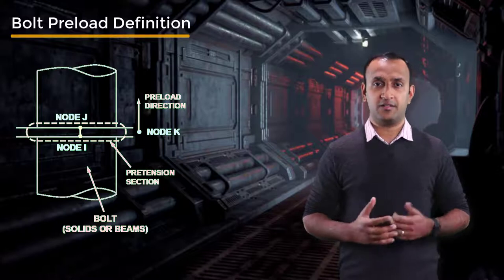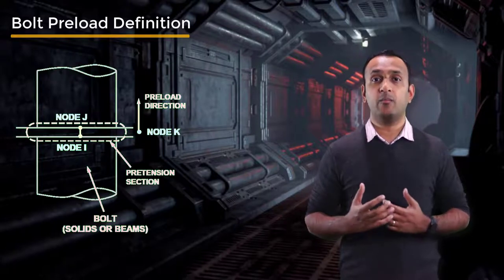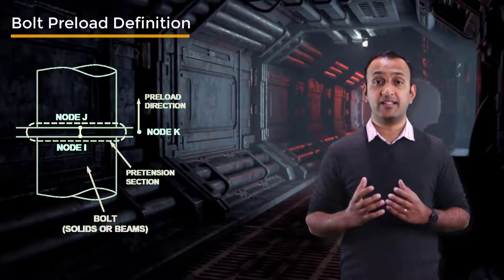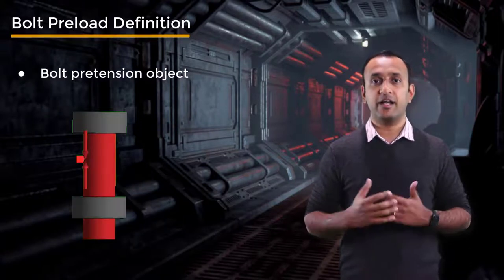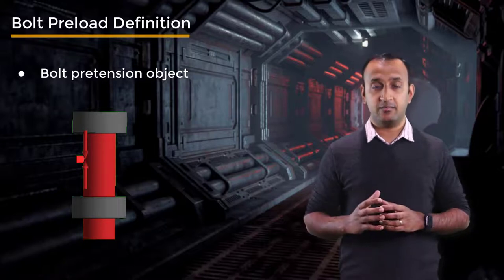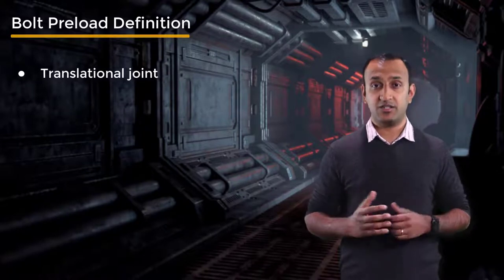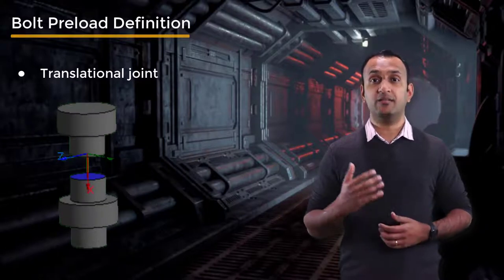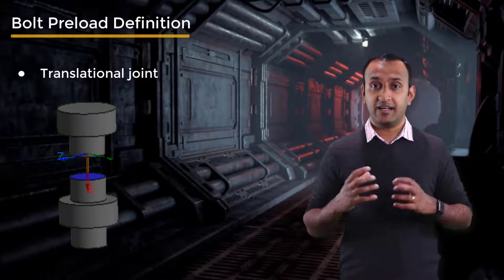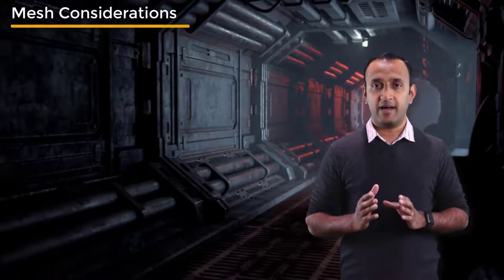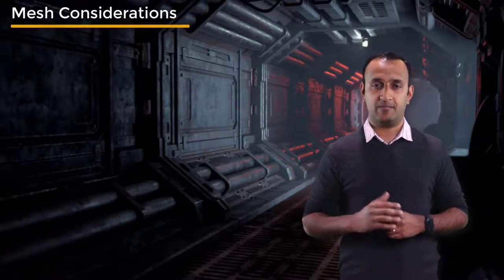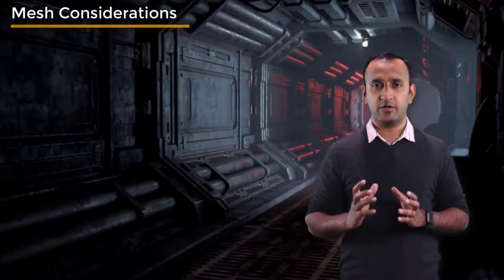There are two ways of defining this. The first method is by using a bolt pretension object in ANSYS Mechanical, and the second method is by using a translational joint. In case of the bolt pretension object, the splitting of the bolt and creation of constraint equations is all done by Mechanical behind the scenes. But when we use a translational joint, the bolt must be split manually in the geometry stage and then connected back using a translational joint. Since the bolt is split into two in both cases, it is necessary to have at least two elements along the length.